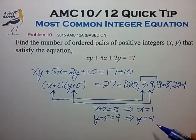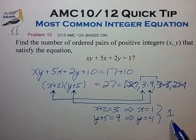This is only one ordered pair, so there is only one solution, and that would be the answer to this question. Again, this is one of the most common integer equation forms, and it's one that you should learn to recognize. Please check out the description section for more examples and videos on solving integer equations. Take care.